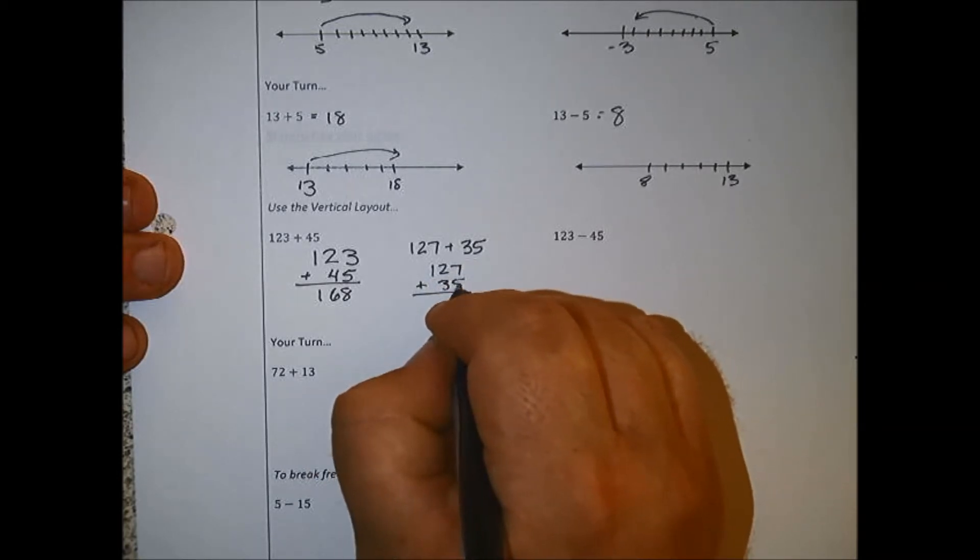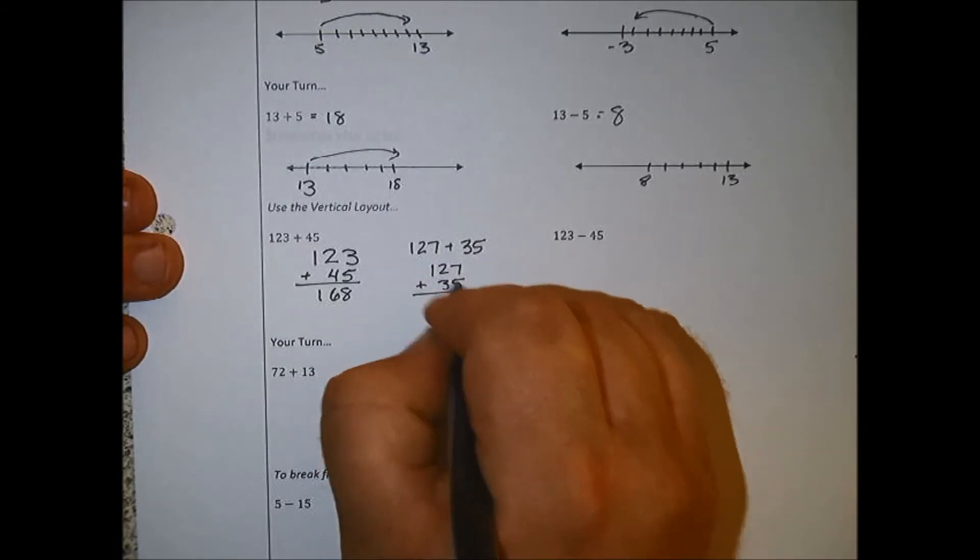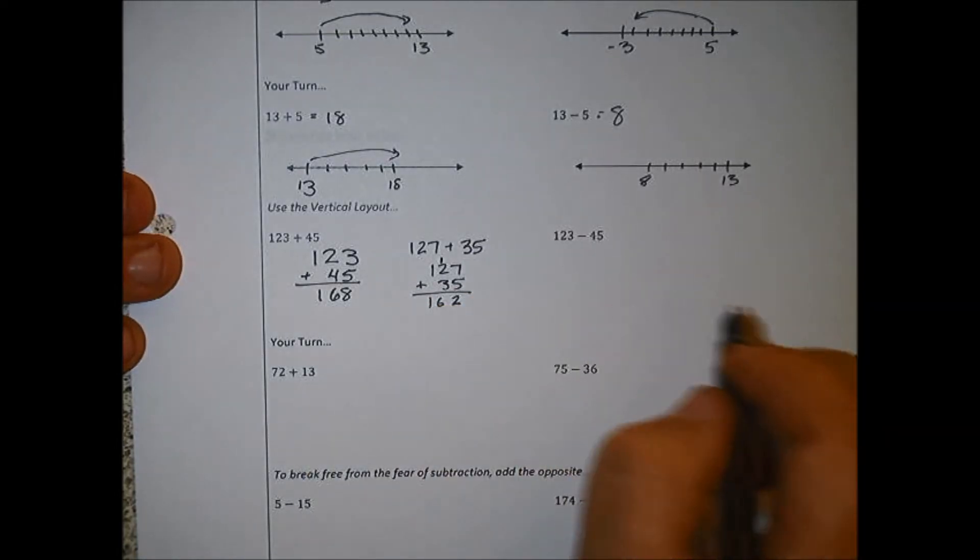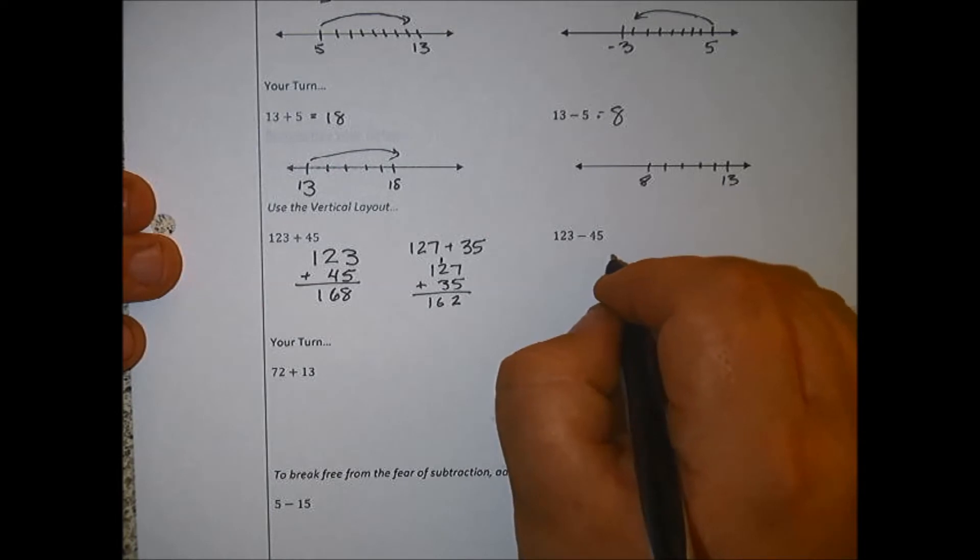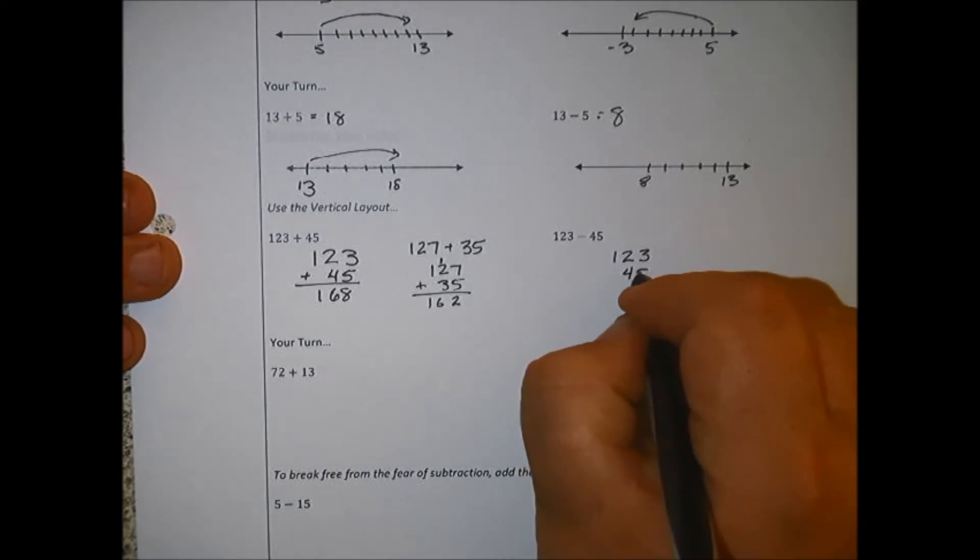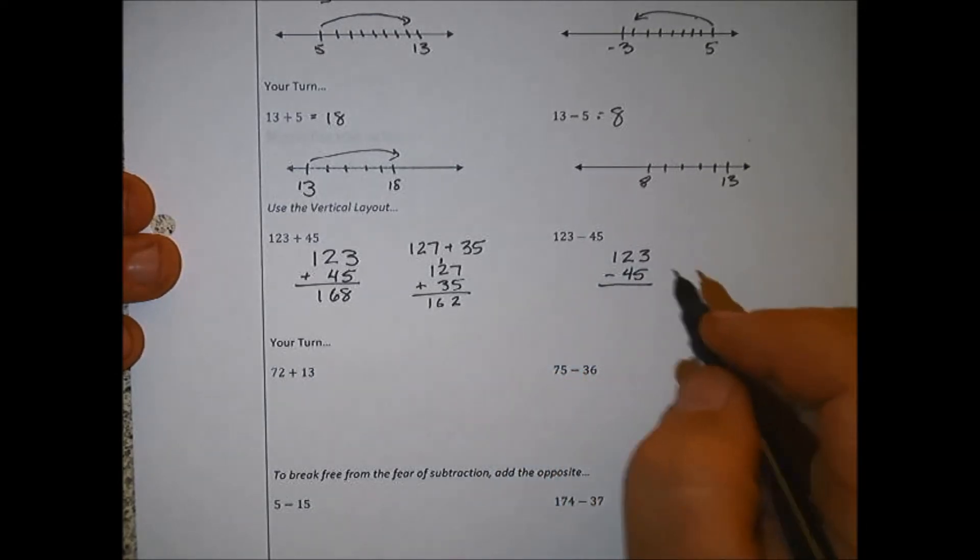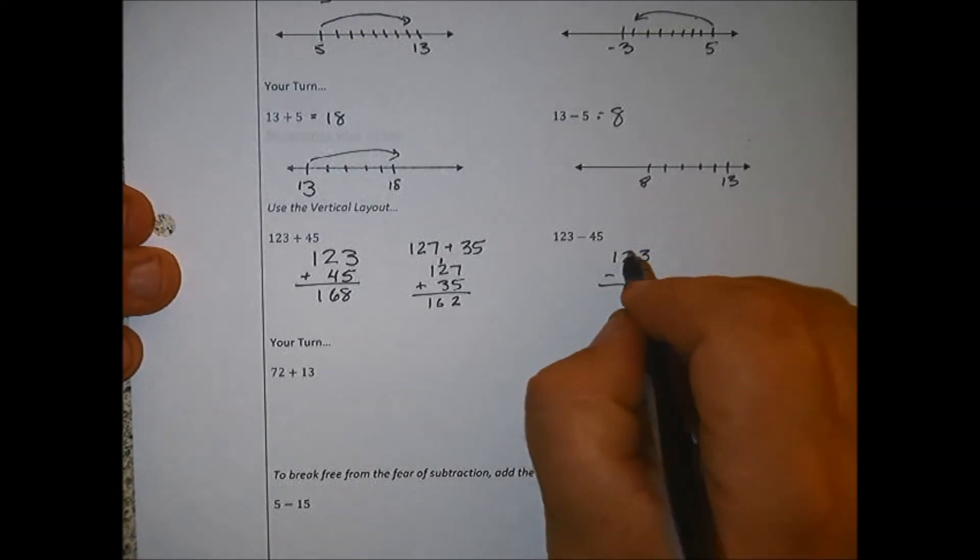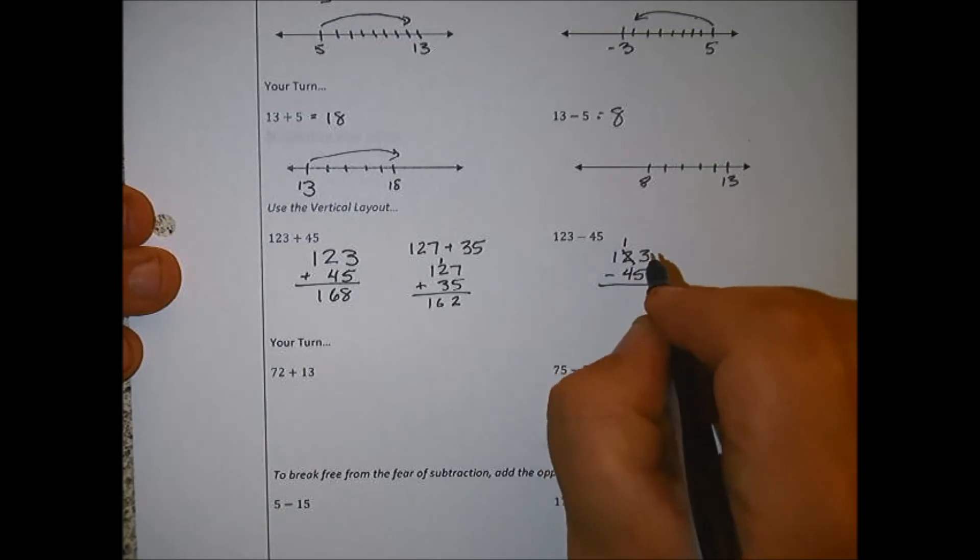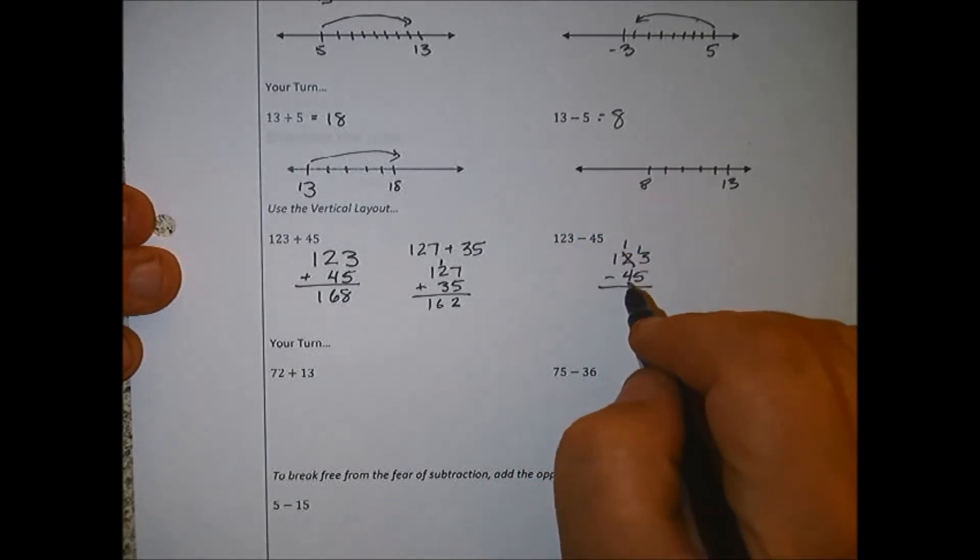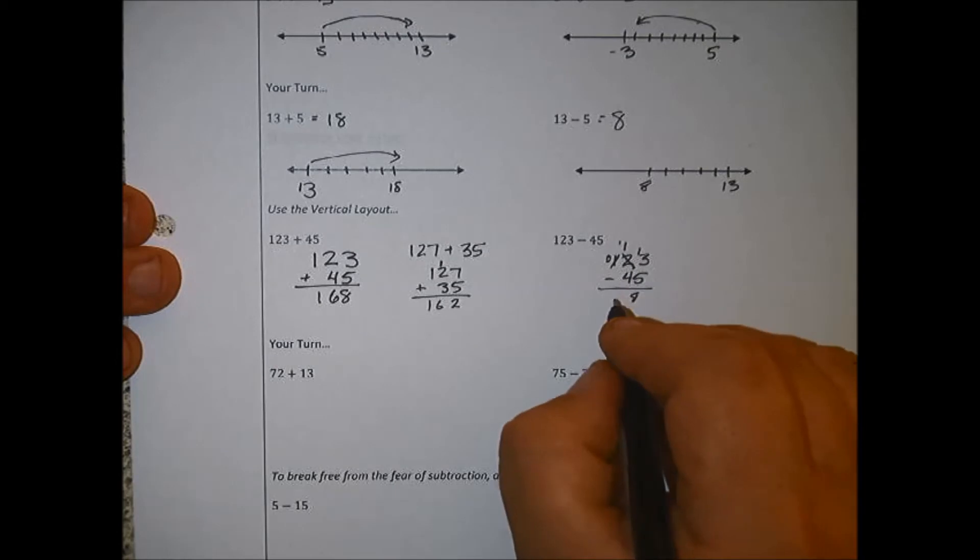Using subtraction we run into a little hard spot, but we can still use the vertical layout. 3 minus 5, when we were little we said we couldn't go 3 minus 5 because that would give us a negative number. I take 1 away from the tens, put it there, now that's 13. 13 minus 5, we did that above, it's 8. I can't go 1 minus 4, but I can take 1 away there, make that 11. 11 minus 4, that would be 7.